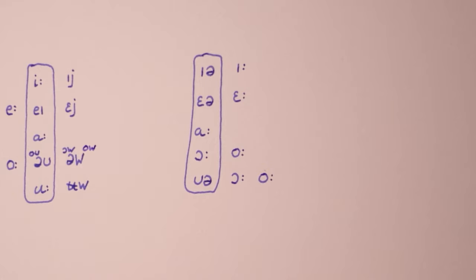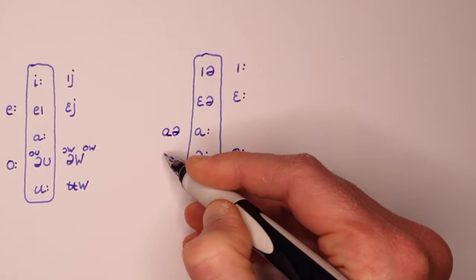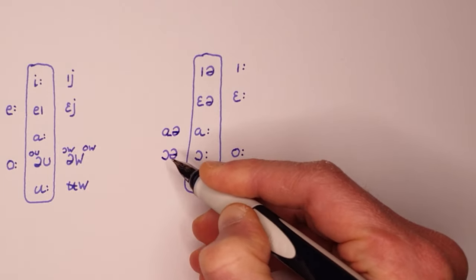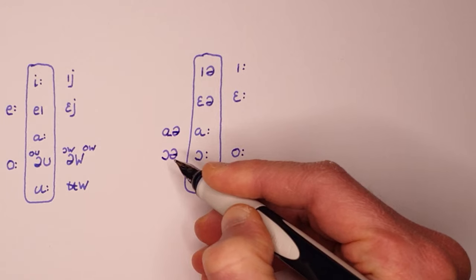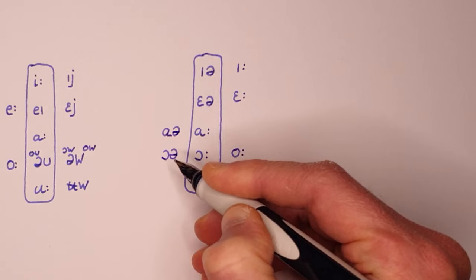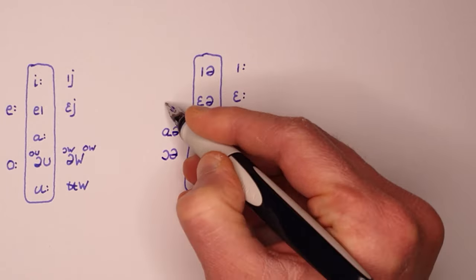Not surprisingly, conservative forms of start and force have a closing diphthong: start, force. As an aside, in older RP, the diphthong in square was a bit more closed, square.